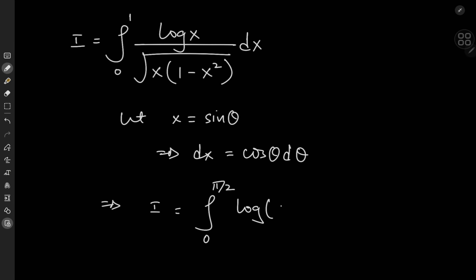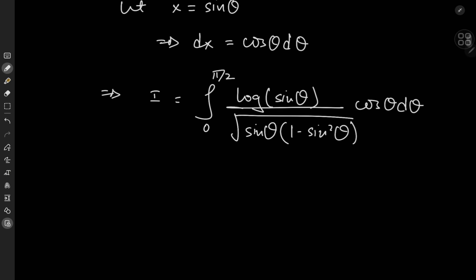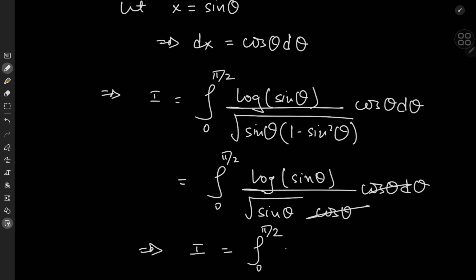Then we have the natural logarithm of sine theta divided by root sine theta times 1 minus sine squared theta, and the differential element is now cosine theta d theta. We know that 1 minus sine squared is cosine squared, so we have the integral from 0 to pi by 2 of log sine theta divided by root sine theta times cosine theta d theta. With cancellation, the transformed integral is from 0 to pi by 2 of sine to the negative one half of theta times the logarithm of sine theta d theta.